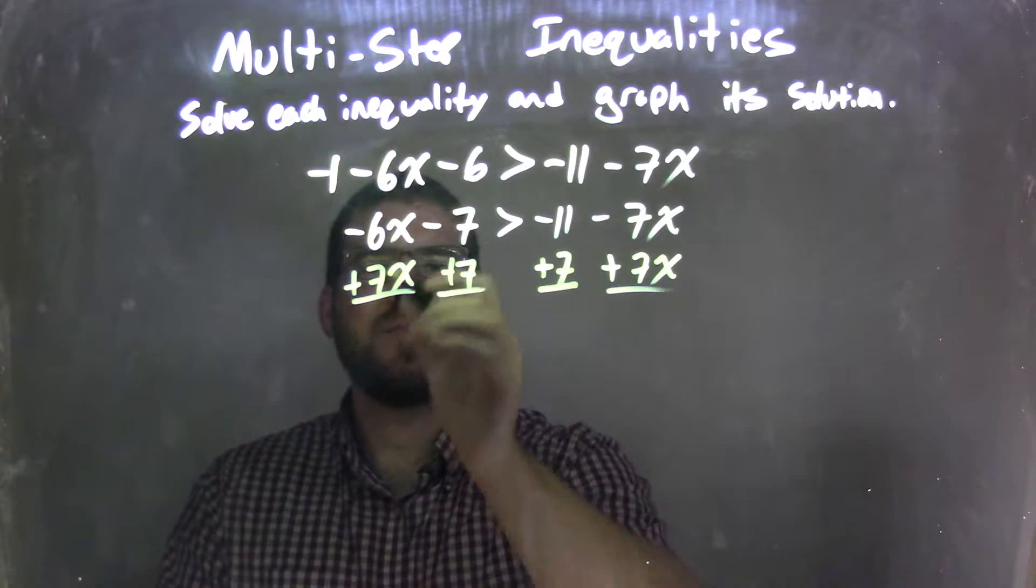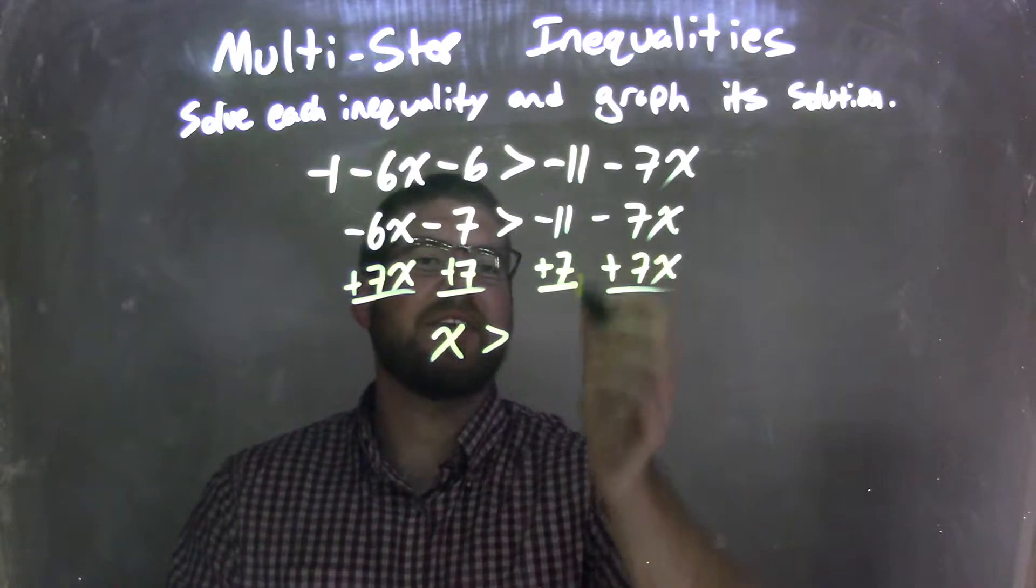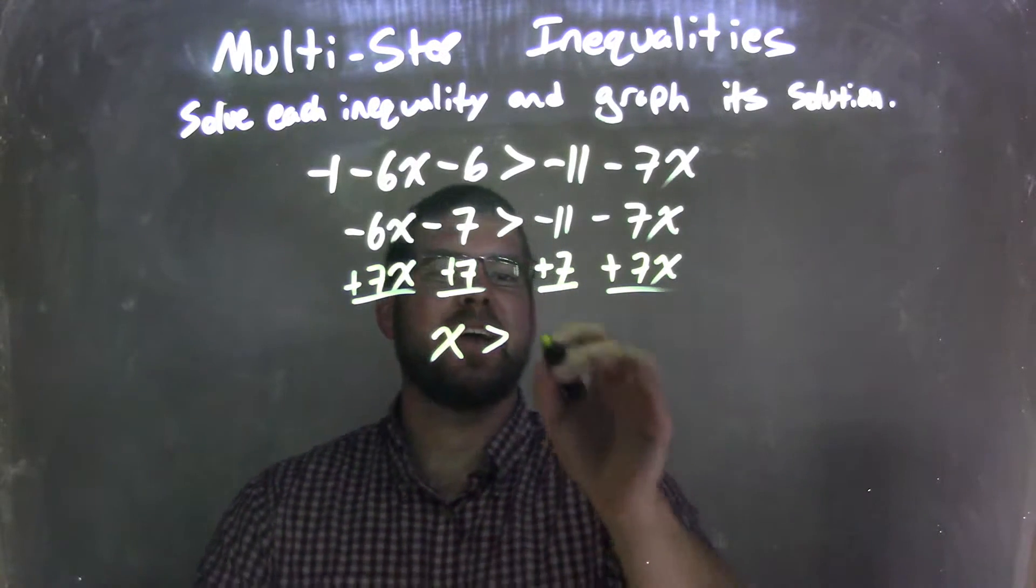That leaves me, negative 6x plus 7x is a positive 1x is greater than, and then negative 11 plus a positive 7 comes out to be a negative 4.